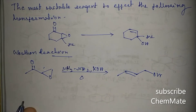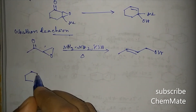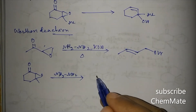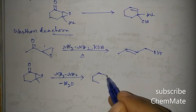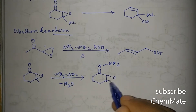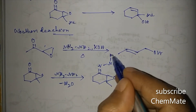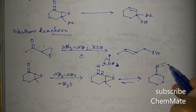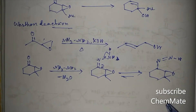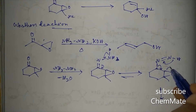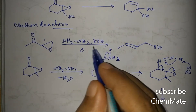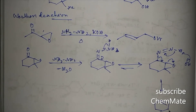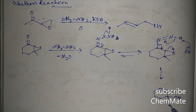We will now discuss the mechanism. If the keto group reacts with hydrazine, one molecule of H2 will be removed to give a hydrazone. It then undergoes tautomerization, followed by ring cleavage. The OH minus (base) takes a proton and the allylic alcohol product is obtained.